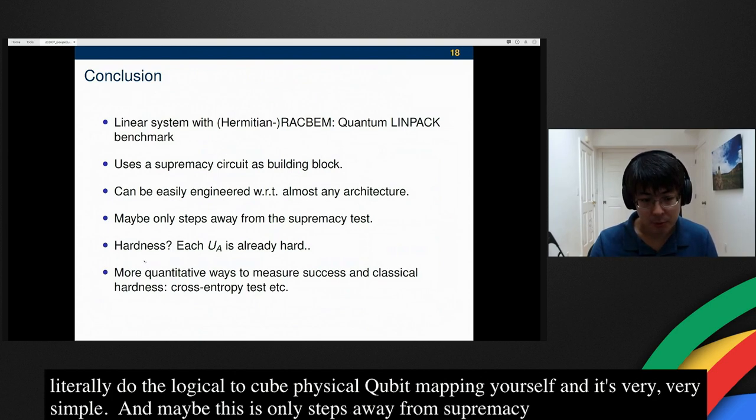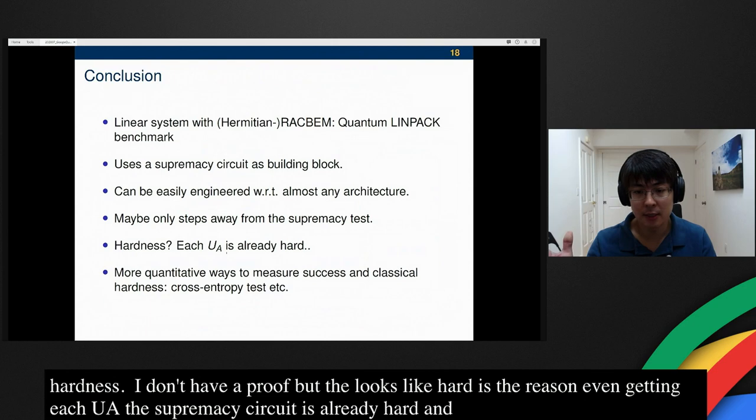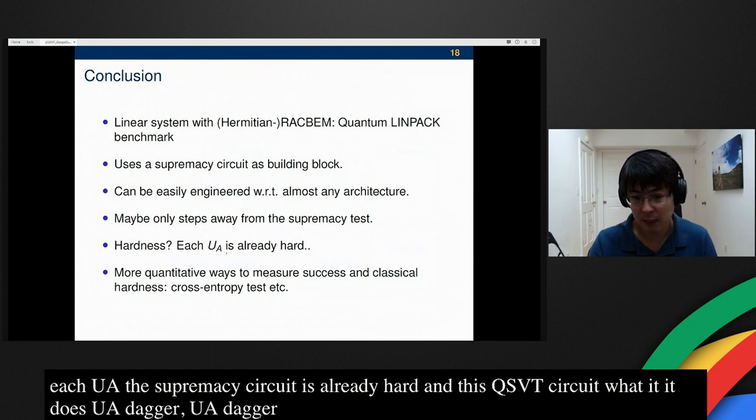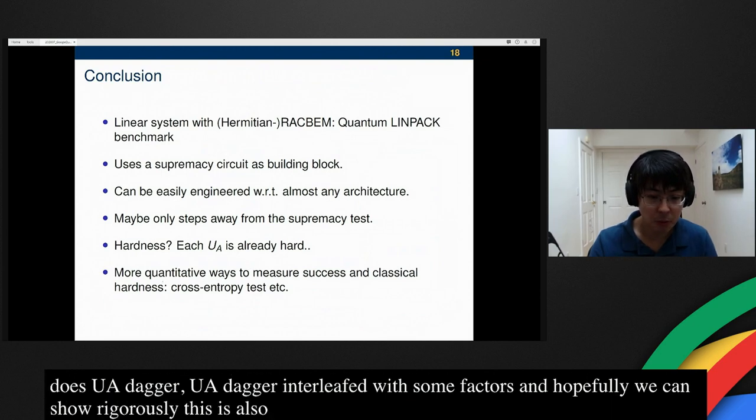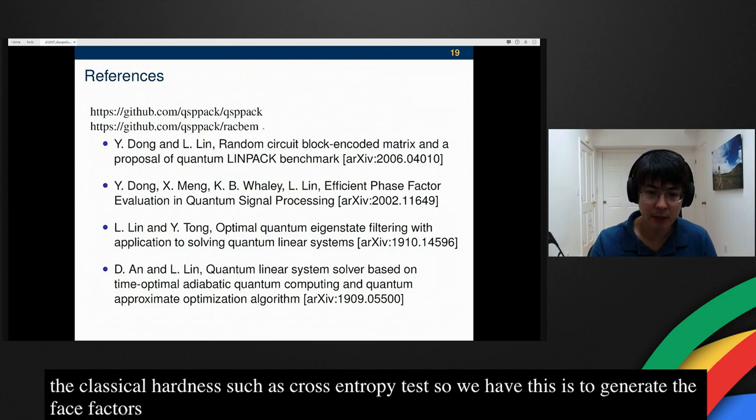What about the hardness? I don't have a proof, but intuitively, it looks like hard. The reason is that even getting each UA, that is the supremacy circuit, is already hard, and this QSVT circuit, what it does is just to have this UA, UA dagger, UA, UA dagger interleaved with some very simple phase factors. Hopefully, we can show rigorously that this is also hard. You can also use more quantitative ways to measure the success and the classical hardness, such as cross-entropy or linearized cross-entropy test. So we have the codes, and this is to generate the QSP phase factors, and this is the RACBEM. Feel free to play and let us know how you think about that.